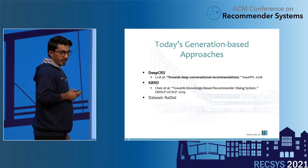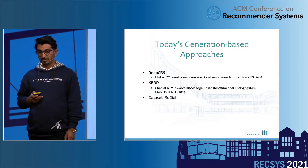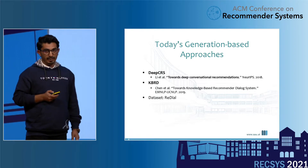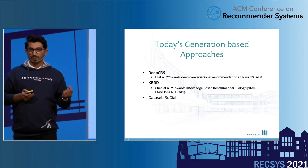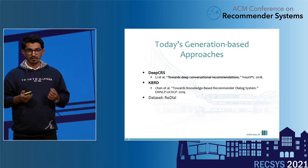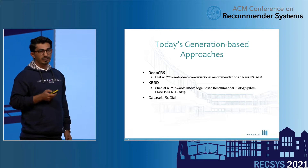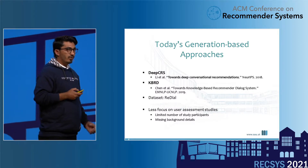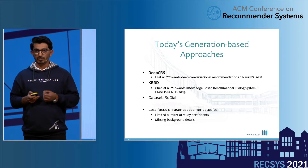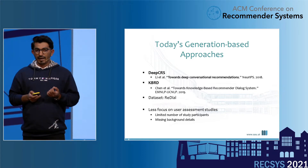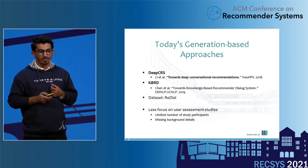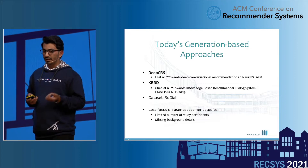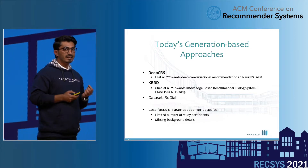DeepCRS and KBRD are the most recent examples of conversational recommender systems based on generation approaches. These two approaches were developed in the context of the ReDial dataset, which is collected with humans where one human played the role of recommender and another as the recommendation seeker — with over 10,000 dialogues in total. While analyzing these two works, we found that focus on empirical or offline evaluations is way too much compared to user-centric evaluations, study participants were quite limited, and details regarding participant backgrounds were often missing. So it was unclear to what extent these systems are usable in practice.